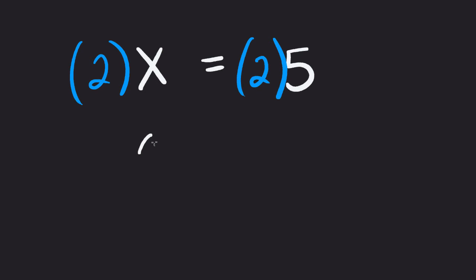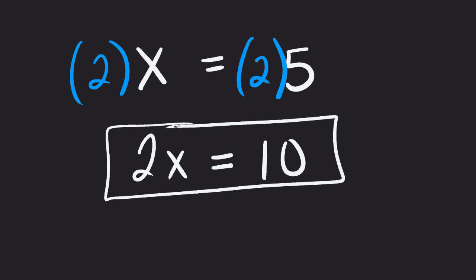Well, on the left-hand side, it gives me 2x, and on the right side, it gives me 10. So it tells me that 2x must be equal to 10. OK, pretty straightforward.